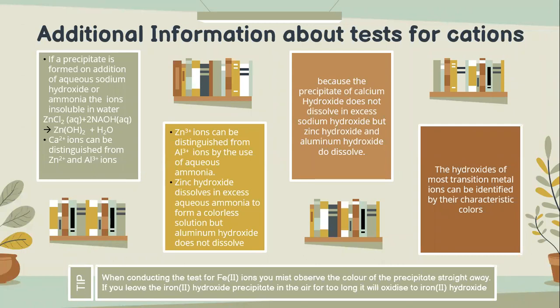Additional information about tests for cations. If a precipitate is formed on addition of aqueous sodium hydroxide or ammonia, it is insoluble in water. For example, ZnCl2 + 2 NaOH → Zn(OH)2 + 2 NaCl. The Ca2+ ions can be distinguished from Zn2+ and Al3+ ions because the precipitate of calcium hydroxide does not dissolve in excess potassium hydroxide, but zinc hydroxide and aluminum hydroxide do dissolve. Zinc Zn2+ ions can be distinguished from aluminum Al3+ ions by use of aqueous ammonia — zinc hydroxide dissolves in excess aqueous ammonia to form a colorless solution, but aluminum hydroxide does not dissolve.